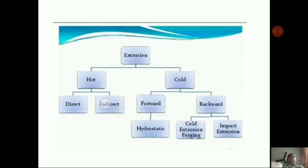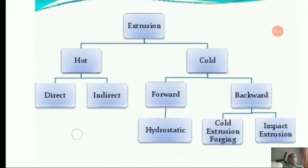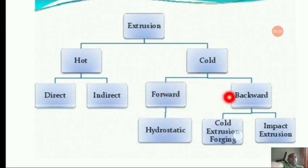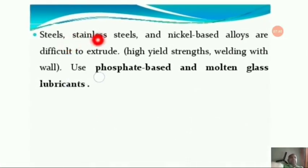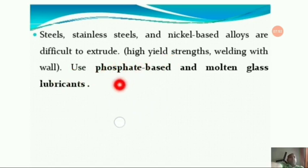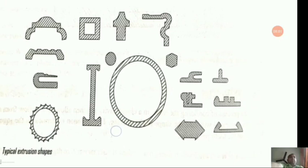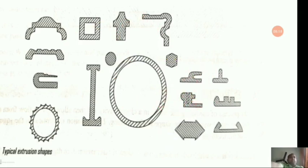Let us have some classification of the extrusion process. There is hot extrusion and cold extrusion. Under hot extrusion, there is direct and indirect extrusion. Under cold extrusion, there is forward and backward — under forward there is hydrostatic, and under backward there is cold extrusion forging and impact extrusion. Steels, stainless steels, and nickel-based alloys are very difficult to extrude because of their high yield strength and tendency to weld to the container wall. Lubricants like phosphate-based coatings and molten glass must be used. This picture shows the different types of extruded shapes and metals coming out of the extrusion process.